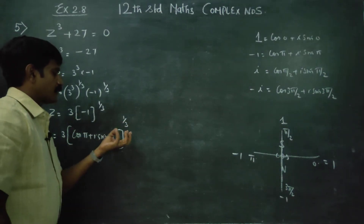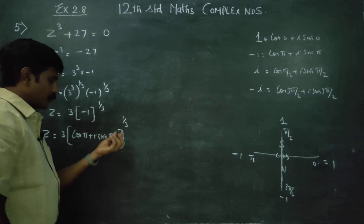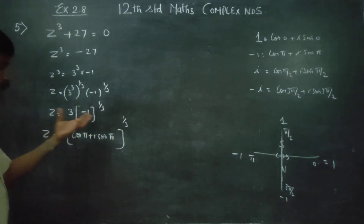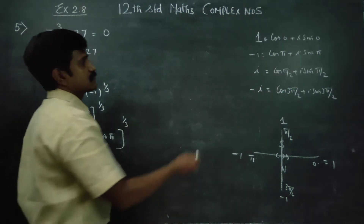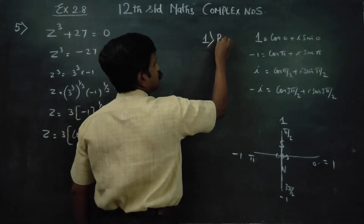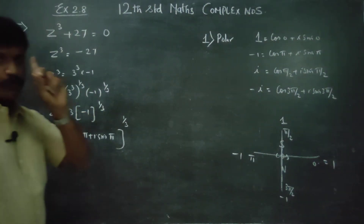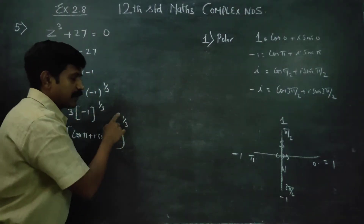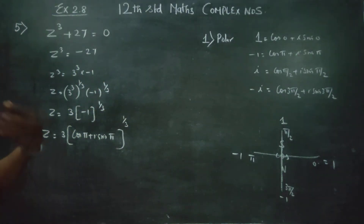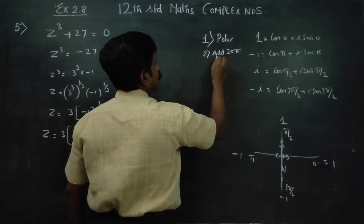To find the nth root of a complex number, there are rules. Rule number 1: change into polar form — we have already done that. If the power is 1/3, 1/4, or 1/n, you need to change the number into polar form. Rule number 2: add 2kπ to the argument. Our argument is π, so we add 2kπ to get the new argument.